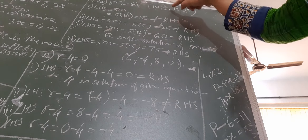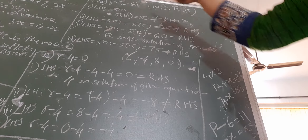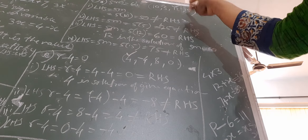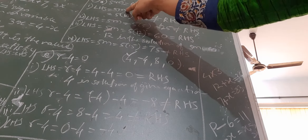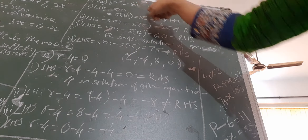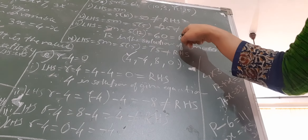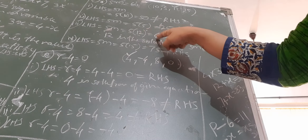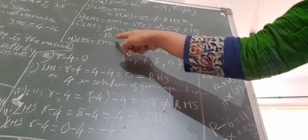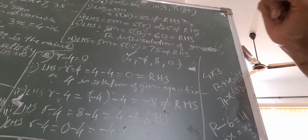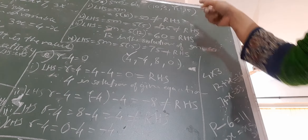Now in the third question, the equation given is 5m = 60, and different values are given. We put these values instead of m and check whether left hand side equals right hand side. For m = 10, 5 into 10 = 50, not equal to right hand side. For m = 5, we get 25, also not equal. For m = 12, 5 into 12 = 60, which equals the right hand side. So m = 12 is the solution. The remaining value also does not satisfy, so it is not the solution.